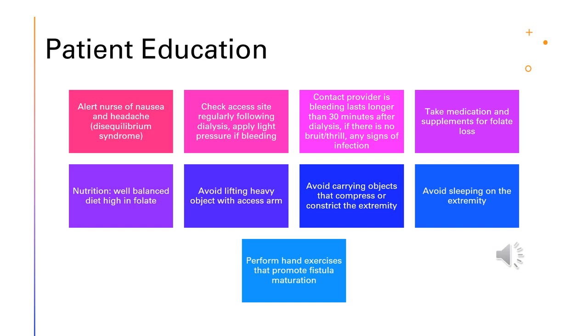Patients also get taught hand exercises that promote maturation of the fistula. When they first get it, they do hand exercises to get the fistula to the point where it can be used. Until it is ready to use, they will have a tunneled central line.